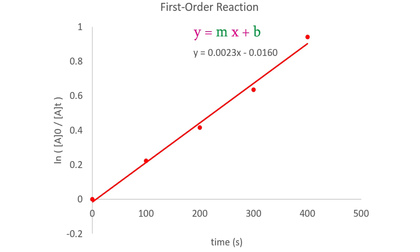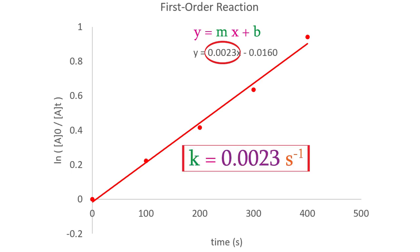So the slope is 0.0023. Since our times were all in seconds, that means the units for k are seconds to the minus one. So now we know the rate constant. This is a very common way of figuring out the rate constant of a new reaction when we discover one during our research.